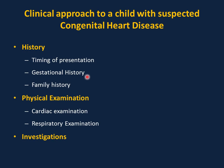Gestational history is important. If the mother is diabetic, maternal diabetes is commonly associated with hypertrophic cardiomyopathy. If the mother received medication during pregnancy, like lithium, this can be associated with Ebstein's anomaly. Family history of congenital heart diseases is also relevant.